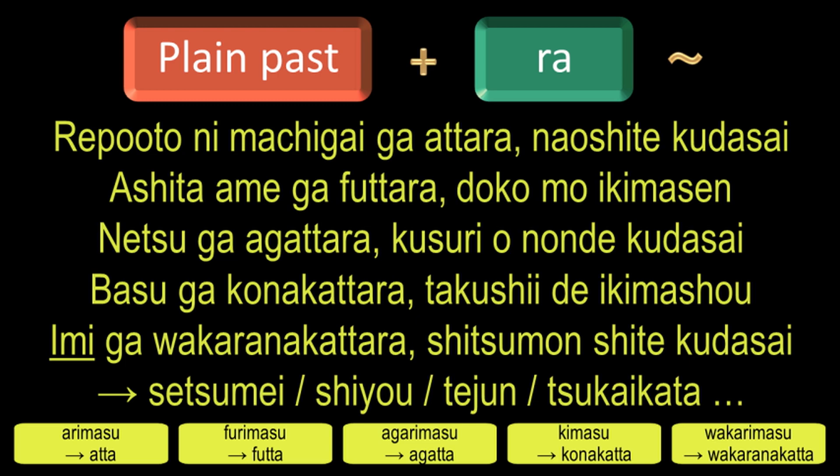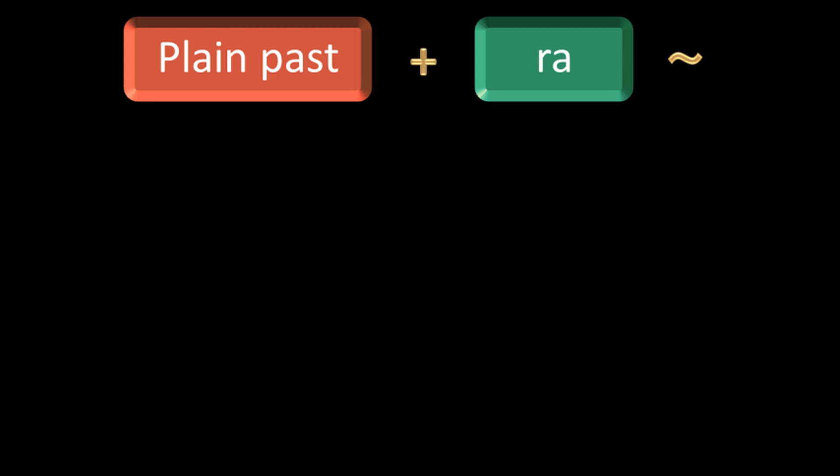As you can see in all these examples, we have added Ra to the plain past form of verbs. Next, let us see a few examples with adjectives. Yasui is an E-adjective and it means cheap or inexpensive. Its plain past form is Yasukatta. By adding Ra, we will get the condition Yasukattara, which means if something is inexpensive.